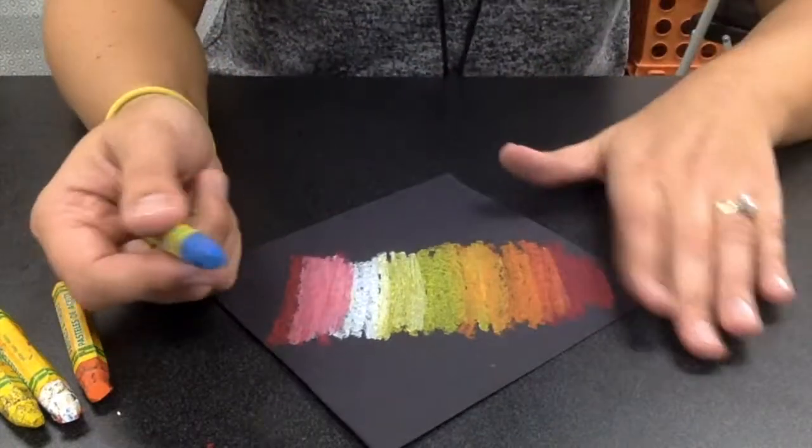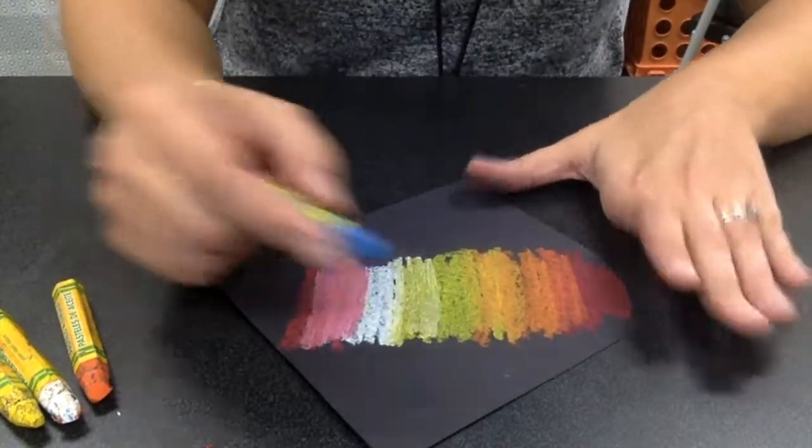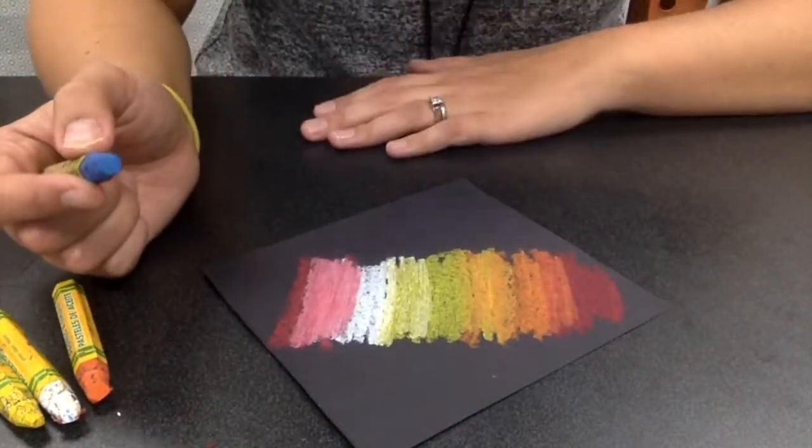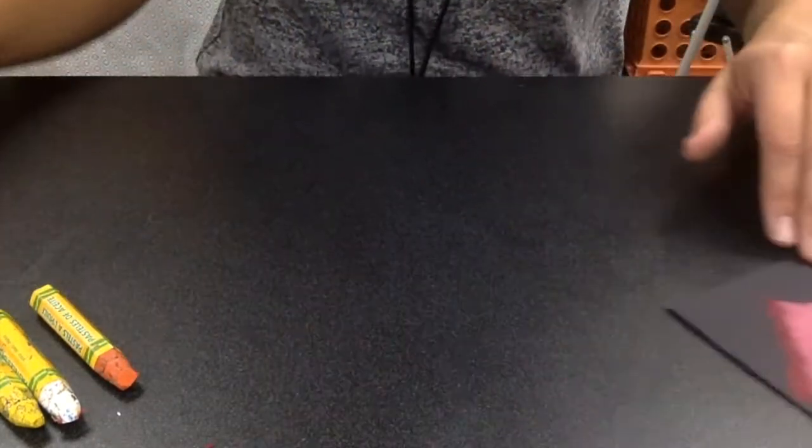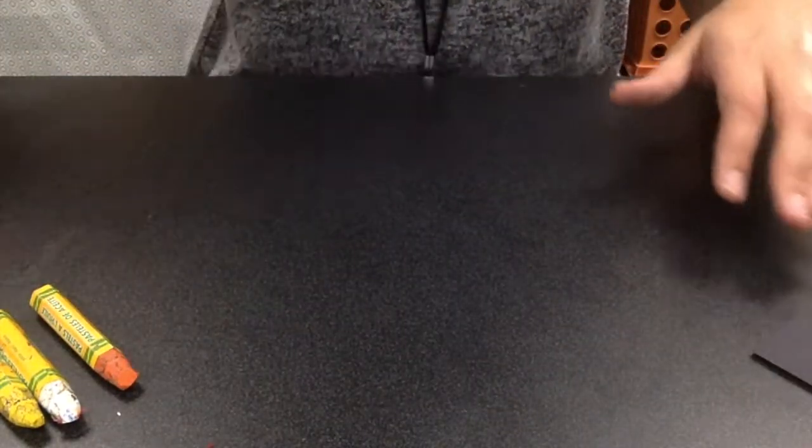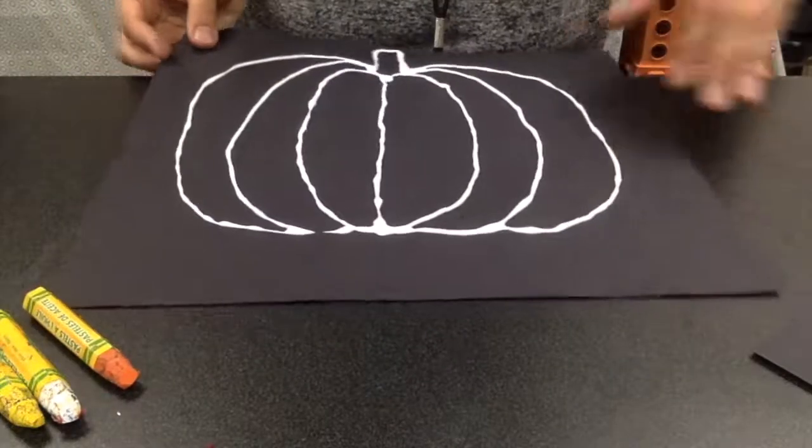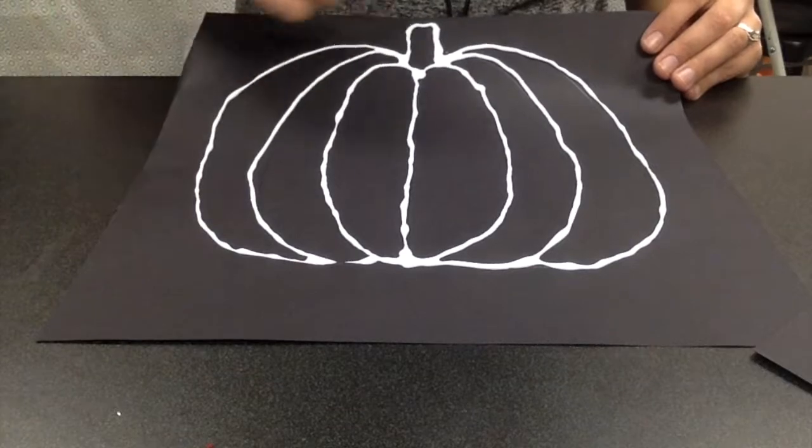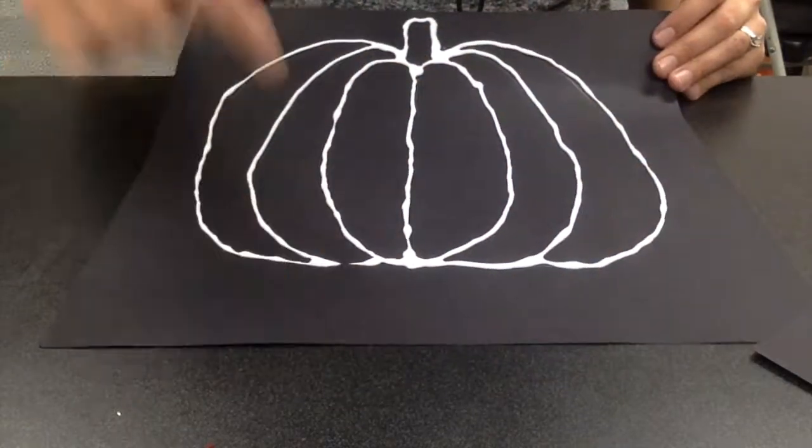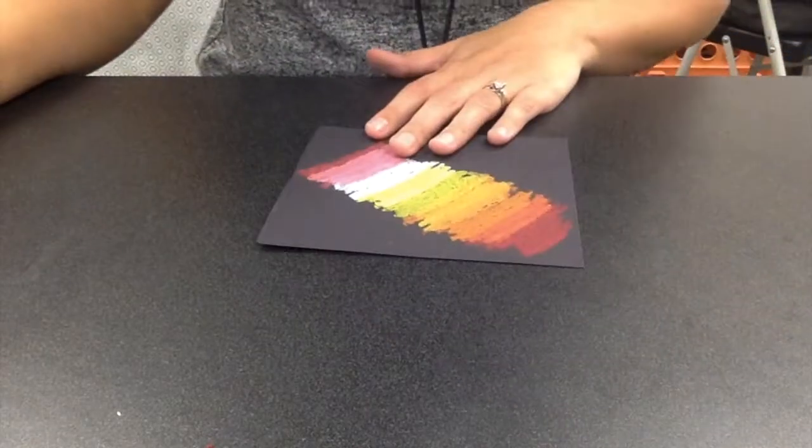Now the background of my pumpkin is going to be blue. The background is the space around the pumpkin. So the background is going to be this space around the pumpkin, and that space is going to be what colors? Blue!